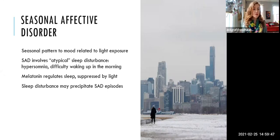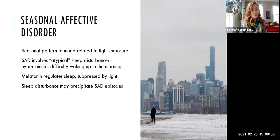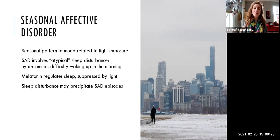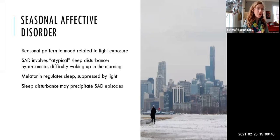In seasonal affective disorder, there's a seasonal fluctuation in mood symptoms related to the amount of light exposure someone is getting. Seasonal affective disorder involves atypical depression symptoms, including atypical sleep disturbance — sleeping too much and difficulty waking up. It is precipitated by not getting enough light exposure, which dysregulates the body's production of melatonin. The body doesn't start producing melatonin at the right time and continues producing it after the time when a person wants to wake up. Having melatonin circulating in your body makes it difficult to wake up, concentrate, and feel energized. There is some evidence that the first symptom of seasonal affective disorder is the sleep disturbance — before changes in appetite, mood, or energy level, the first thing to change is hypersomnia.